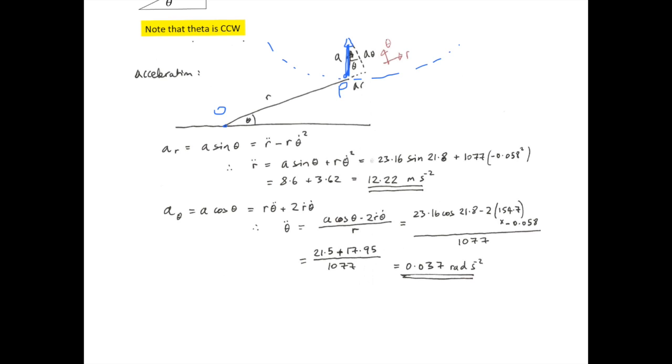So, in exactly the same way as we did for the velocity, we're going to decompose this into the R and theta components. So, we have AR being this section, and A theta being this section. We relate that to the definitions of AR and A theta that we've derived in class.